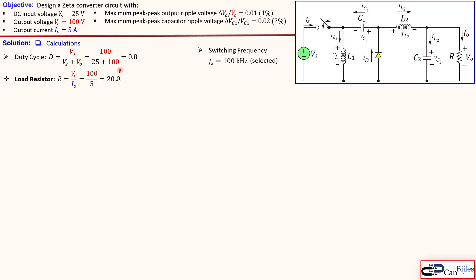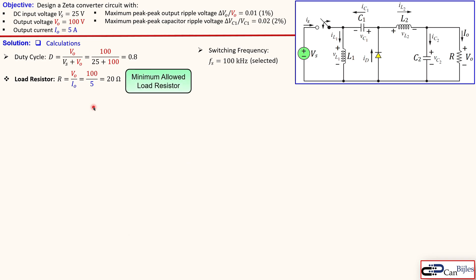Using Ohm's law simply results in 20 ohms. If you make this resistor less than 20 ohms you require more current so your voltage will also drop. So this is the minimum allowed load resistor. If you go up you can still create your output voltage and the required output current, but 20 ohms is the minimum load resistor we need here.